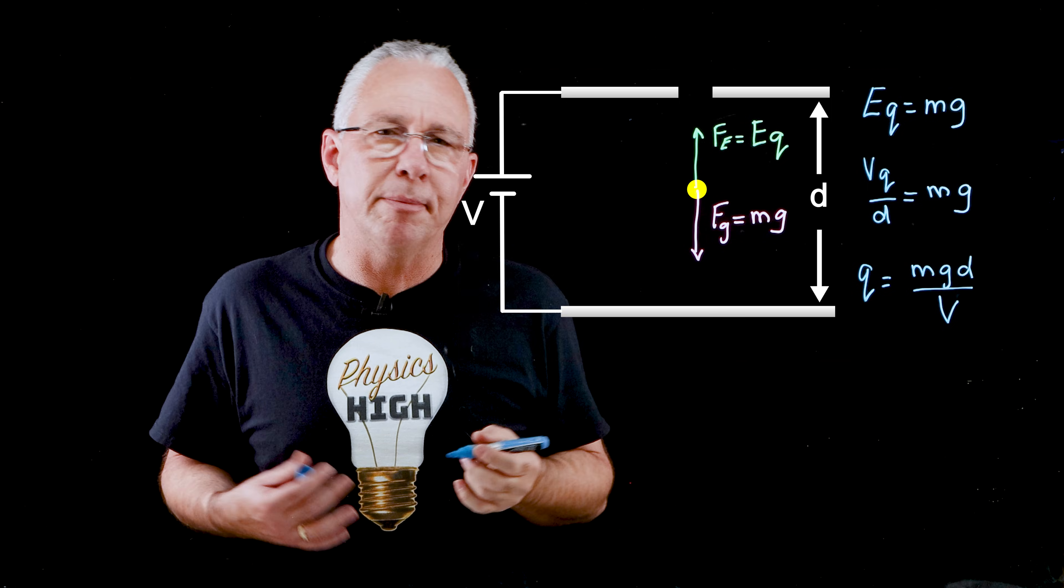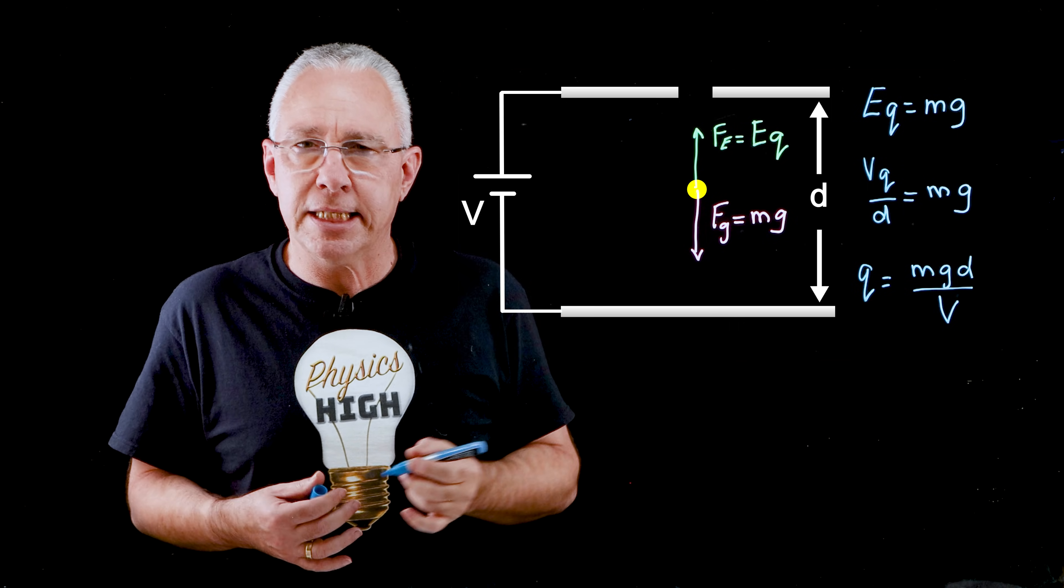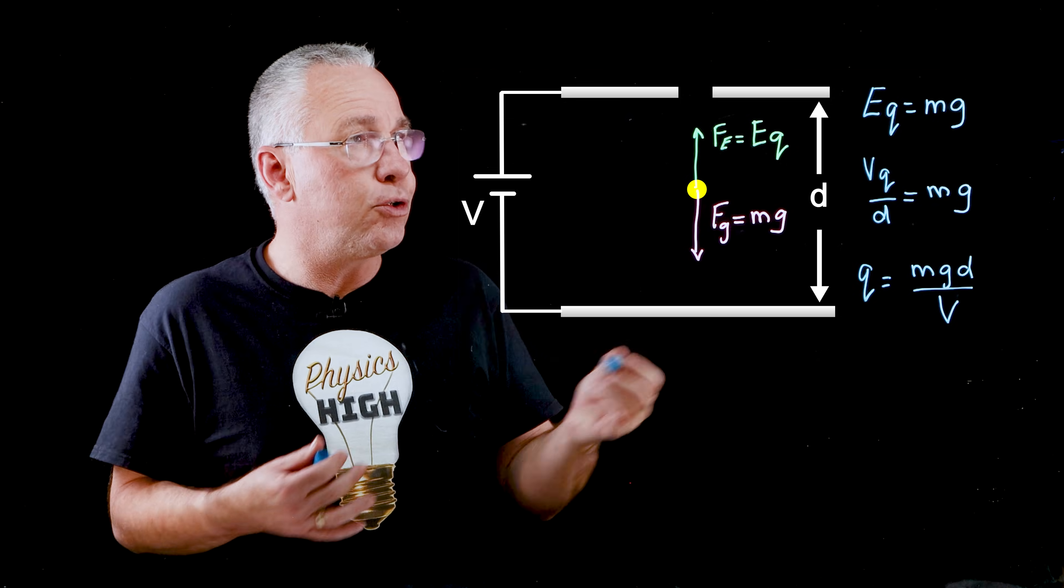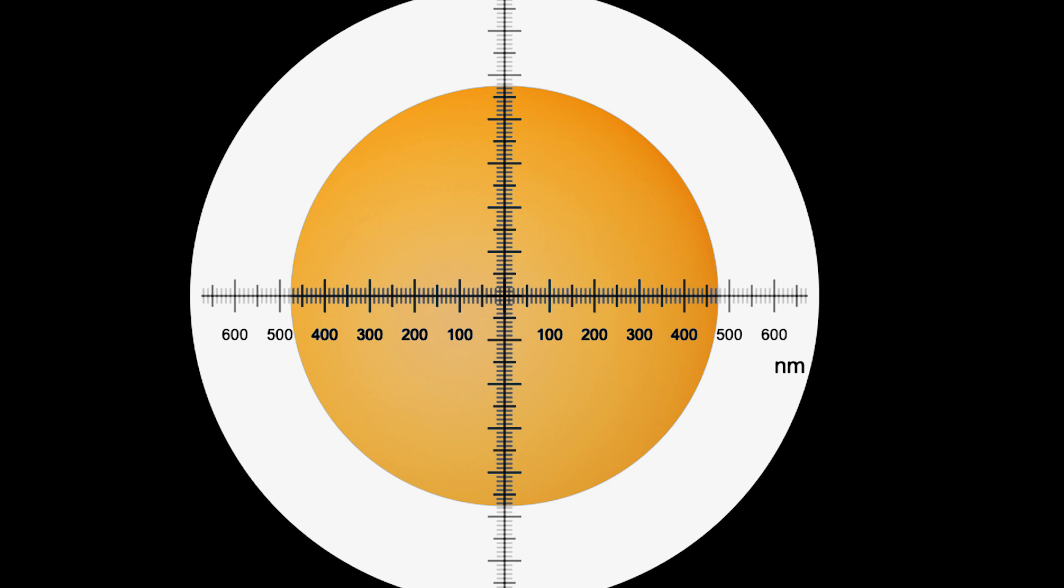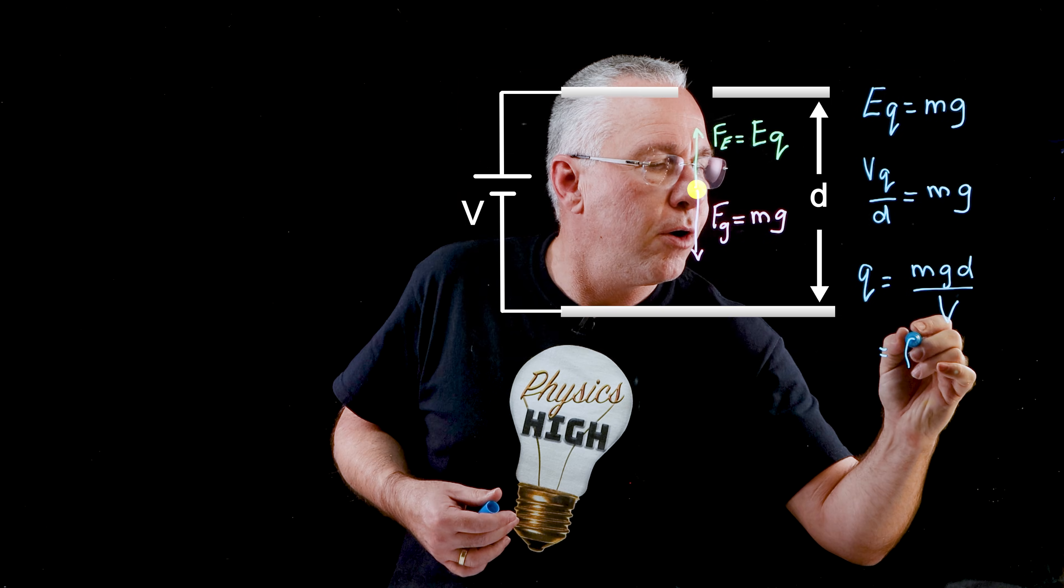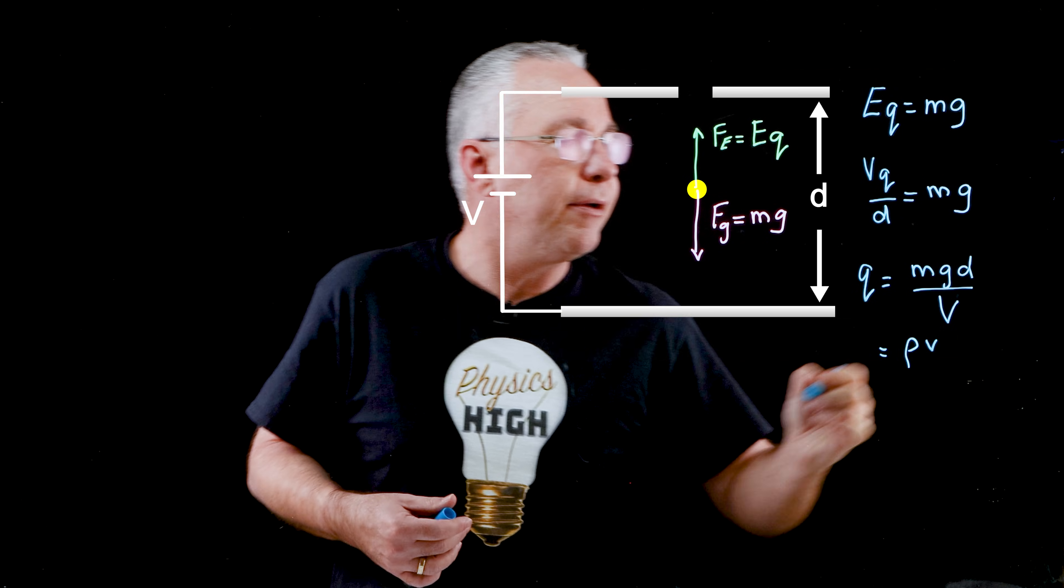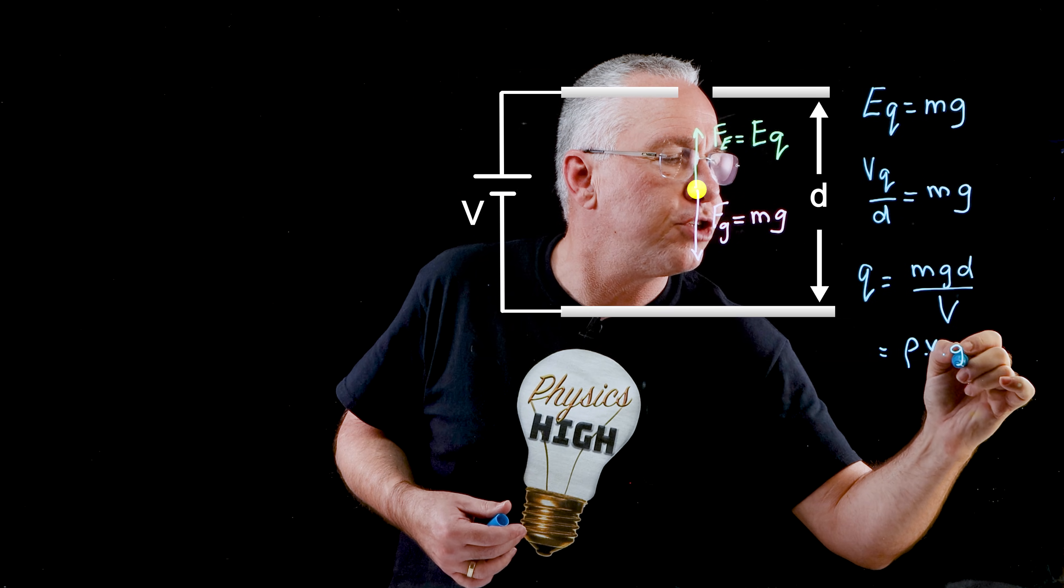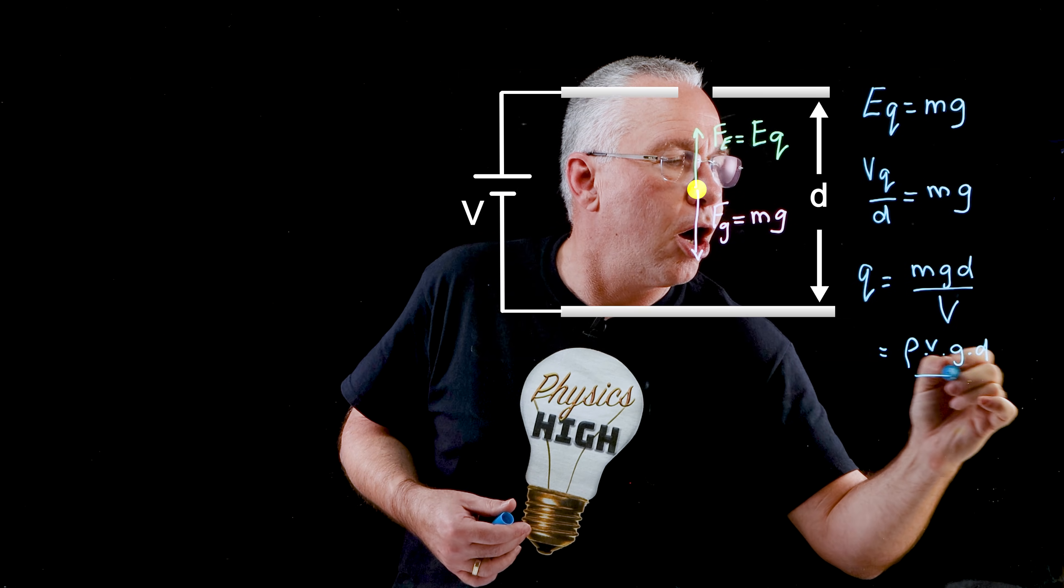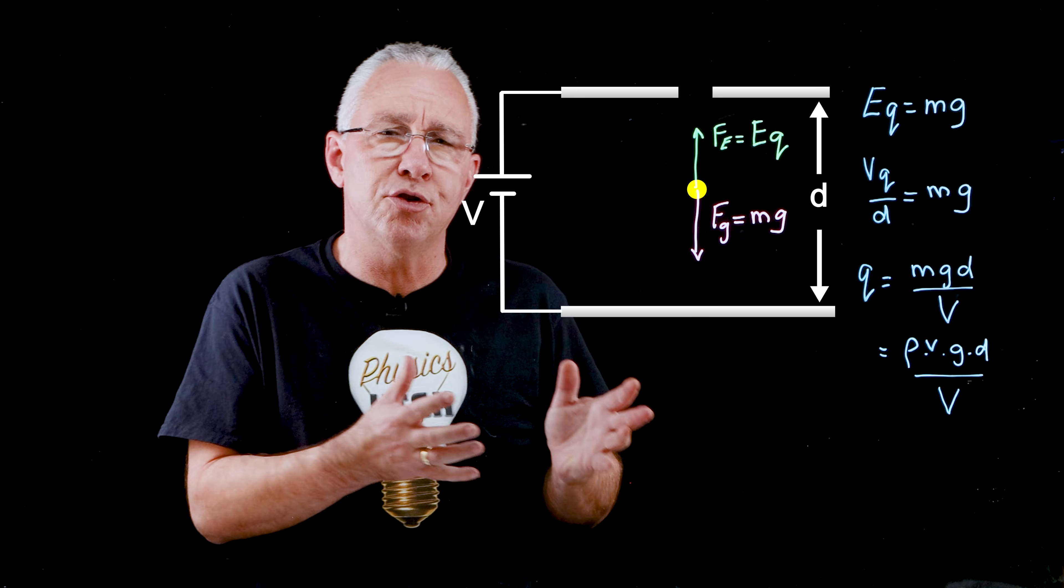But you may be wondering how did Robert Millikan determine the mass of the oil drop? He knew the density of the oil drop and all he had to do was with his microscope determine the volume by measuring the diameter of that particular oil drop. What we end up getting is ρ, the density of the oil, multiplied by the volume, multiplied by g, multiplied by d over the potential difference. As a result he was able to determine the charge.